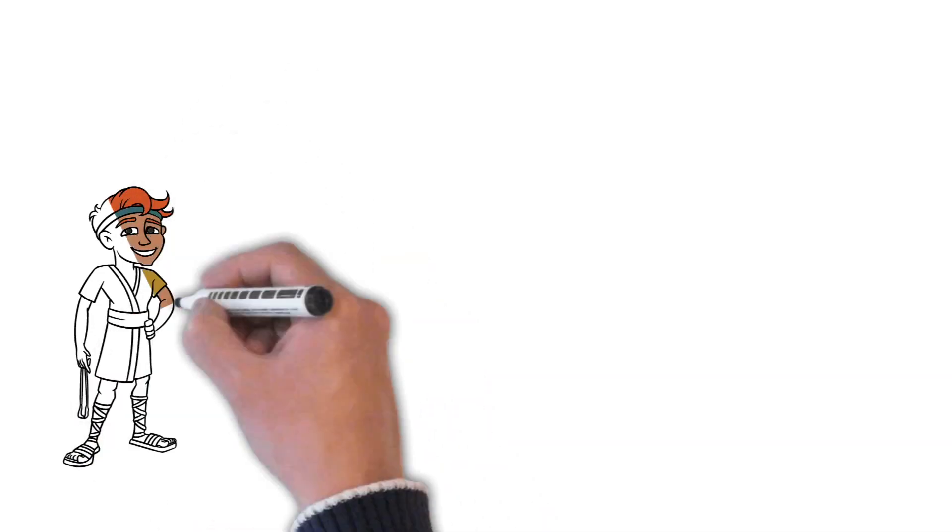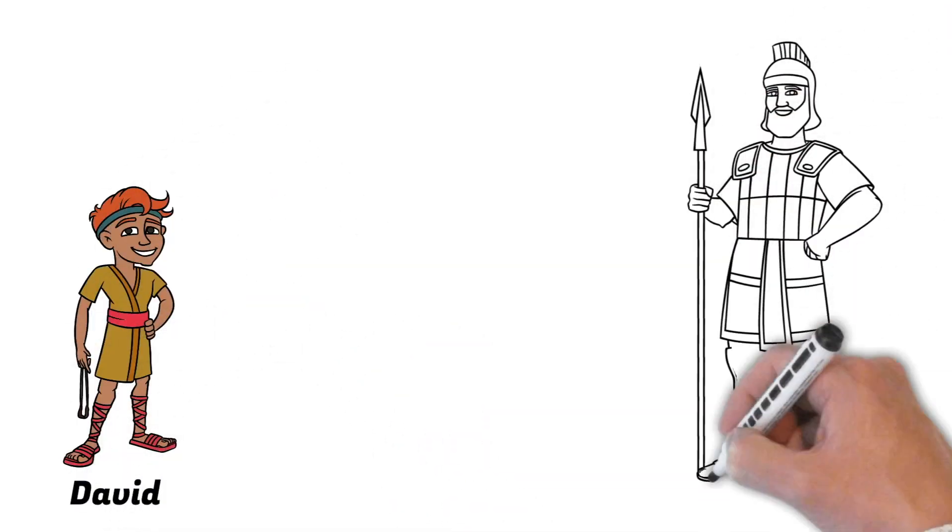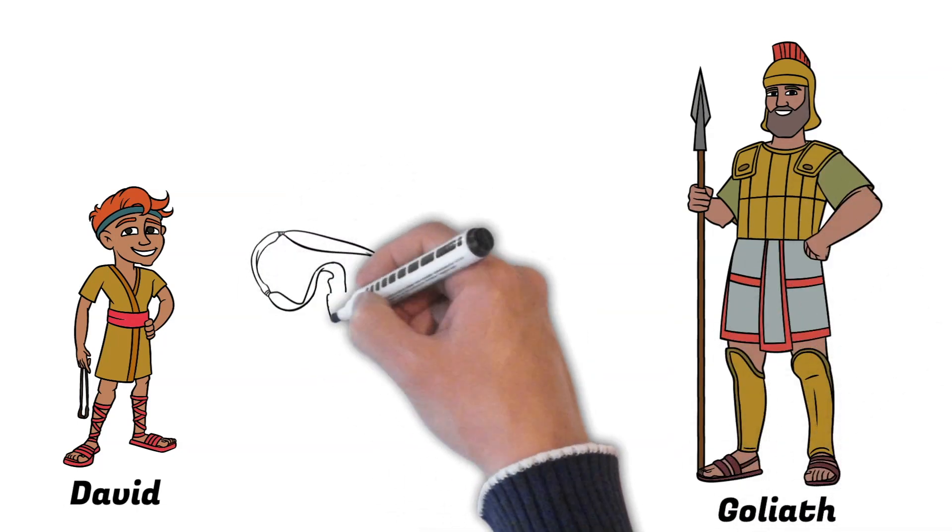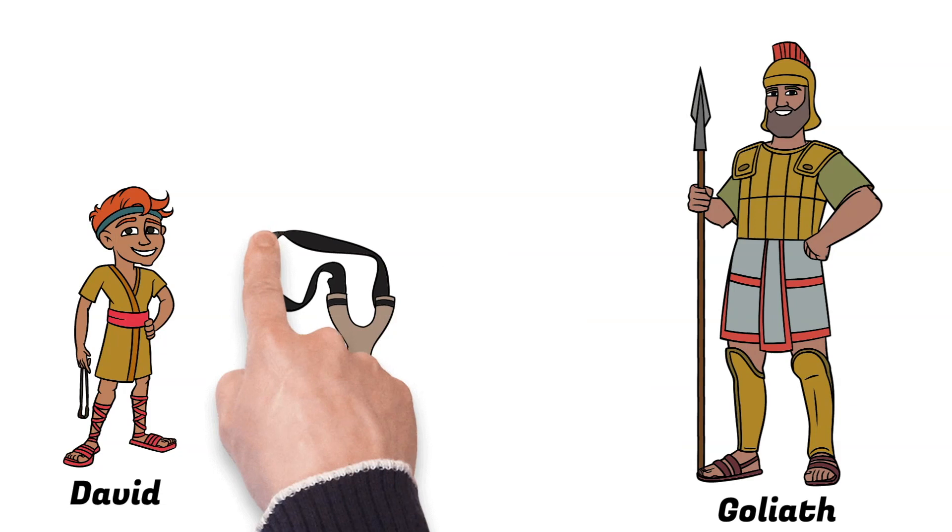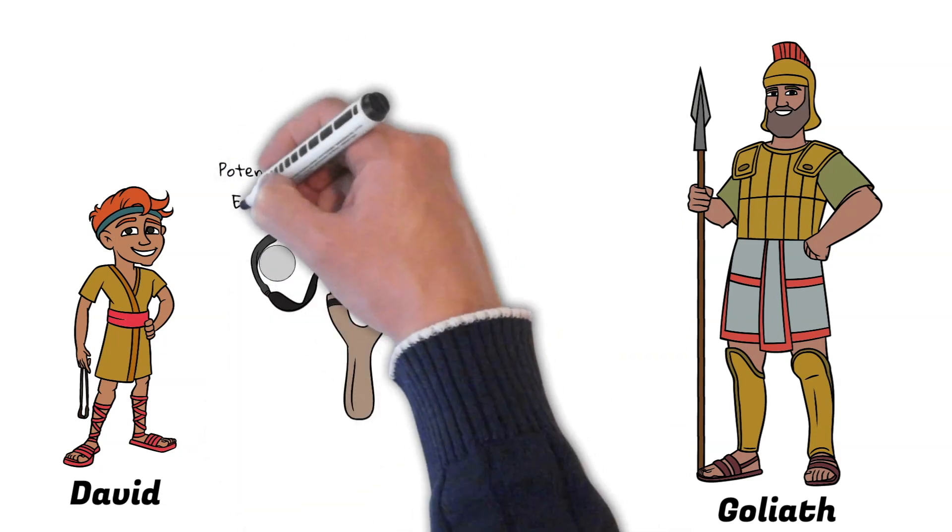I often think about David and Goliath in this example. If David had a traditional slingshot, as he put the rock in the slingshot and pulled it back, that is what is called potential energy. And as he lets it go, then it will be transferred to kinetic energy.